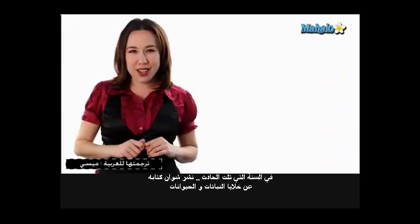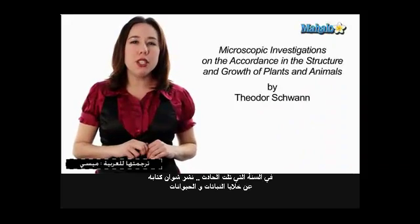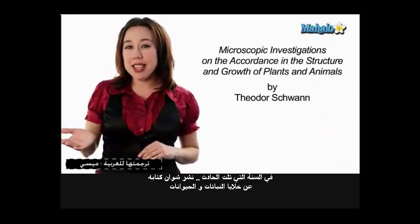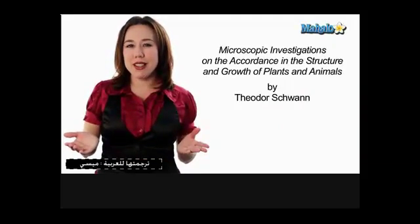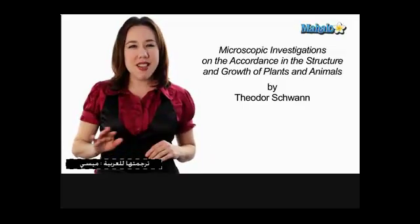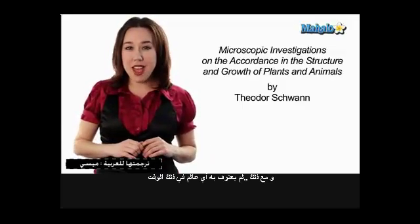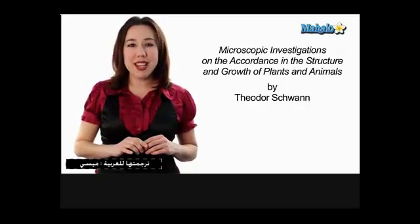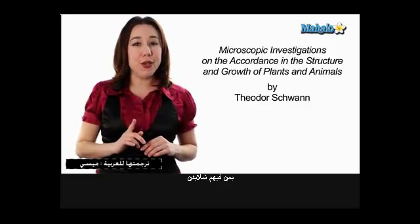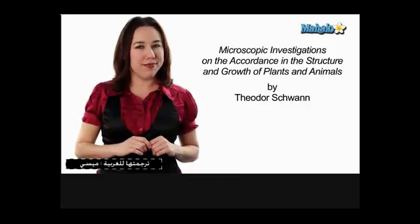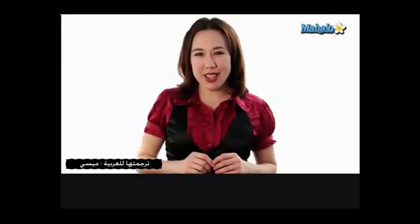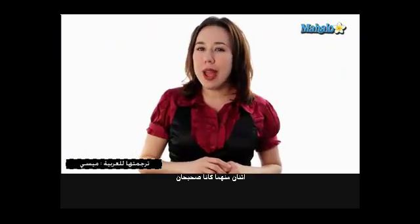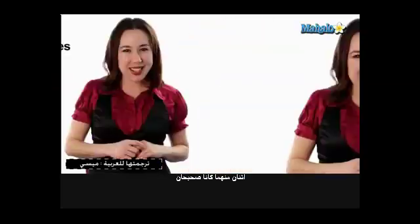The very next year, Schwann published his book on his findings on both plant and animal cells. However, it was completely devoid of any acknowledgment from any other scientist, including Schleiden. In his book, Schwann laid out three hypotheses, two of which were actually correct.